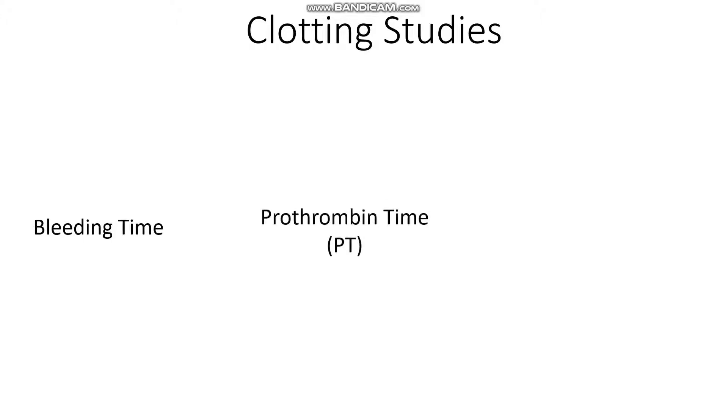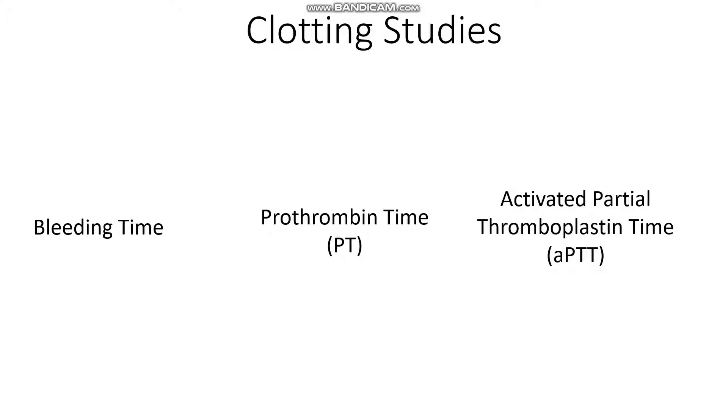When we order a panel of clotting studies, there are three main things that we're interested in finding out. Firstly, what is the bleeding time? Secondly, what's the prothrombin time? And lastly, what is the APTT, or the activated partial thromboplastin time?